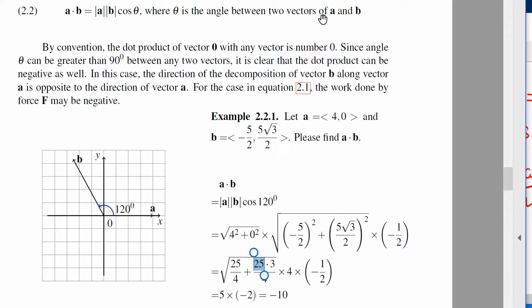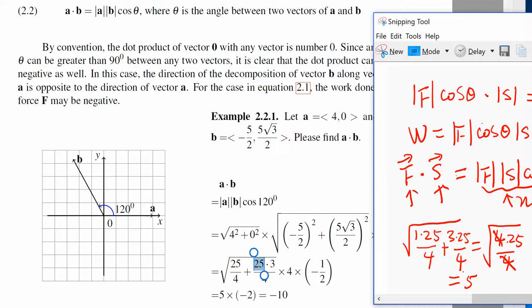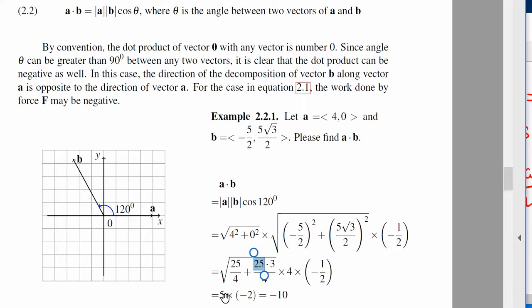And then times 4 times negative 1 half, that's cosine 120 degrees, which is negative 1 half. So then the first one is 5, the second one is 4 times negative 1 half. So we have 4 times negative 1 half is negative 2 times this quantity which was 5. So then we get 5 times negative 2, which is negative 10.